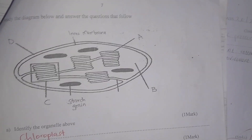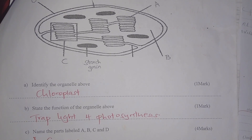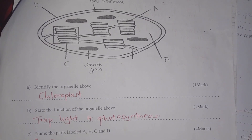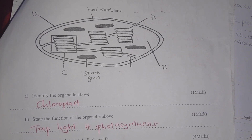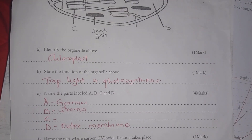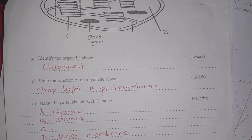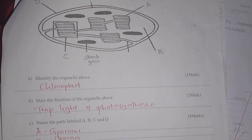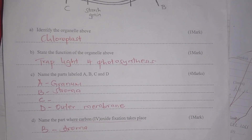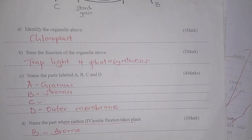Study the diagram and identify the organelle — it is a chloroplast. Its function is to trap light for photosynthesis. Name the parts labeled A, B, C, and D: A is the granum, B is the stroma, D is the outer membrane. Carbon dioxide fixation takes place in the stroma.